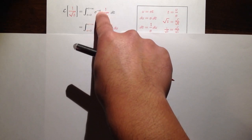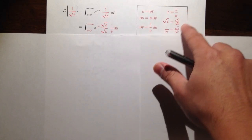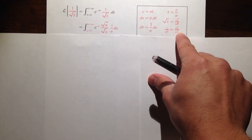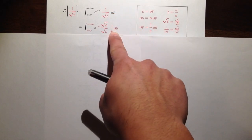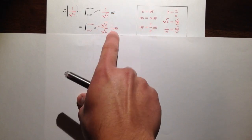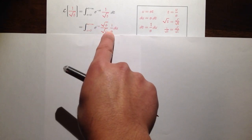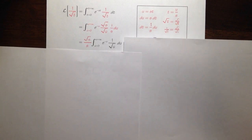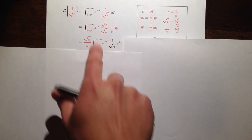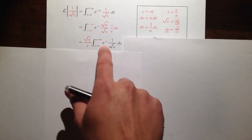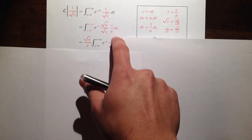We have e to the negative st — st is u, so we have e to the negative u. 1 over square root of t becomes square root of s over square root of u, so that goes right here. dt equals 1 over s du, and that goes right here. Then we take care of the s constants: we can take the square root of s out and also take the s out, giving us square root of s over s.